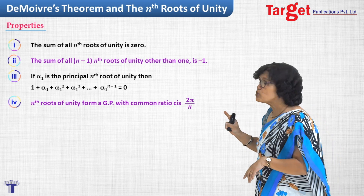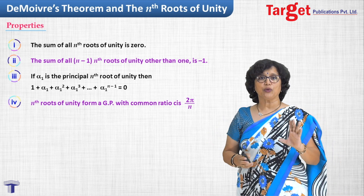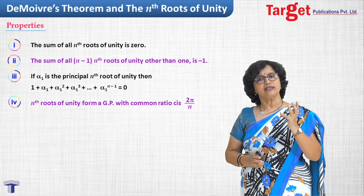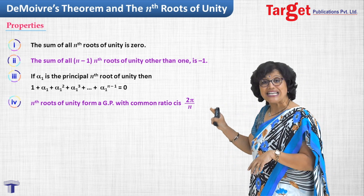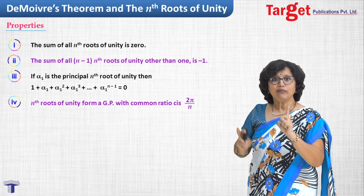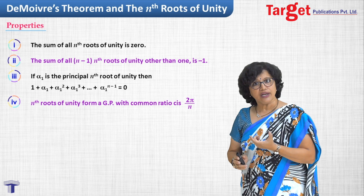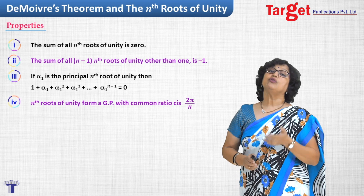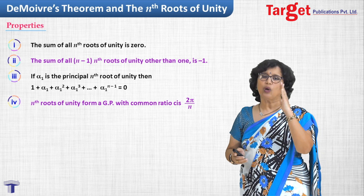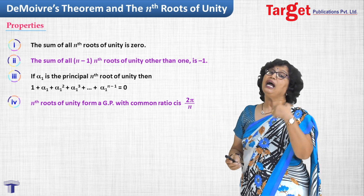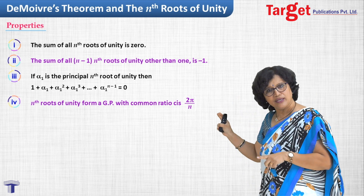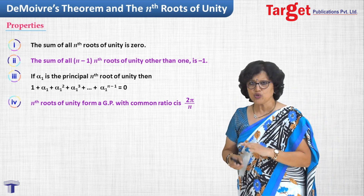Another property: the nth roots of unity form a geometric progression with common ratio cos(2*pi/n) + i*sin(2*pi/n). That 'cis' notation stands for cos plus i sin, so the common ratio is cos(2*pi/n) + i*sin(2*pi/n). Those who have done sequences and series can verify this themselves; those who haven't will understand once they cover geometric progressions.